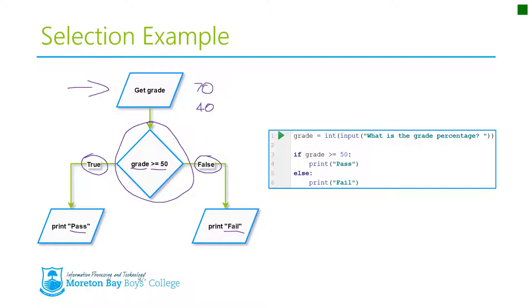It says if the value of grade is greater than or equal to 50, then you do what's in the indent down here. So you will print pass, and then once you've completed that, go to the end of the statement and continue on with the program. In this case, the program finishes.